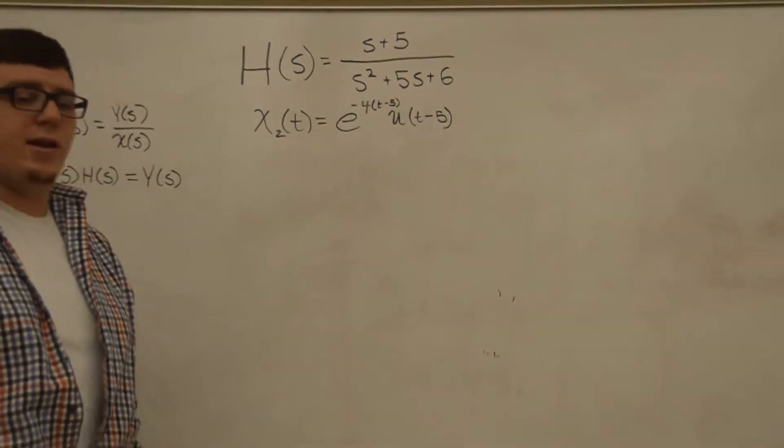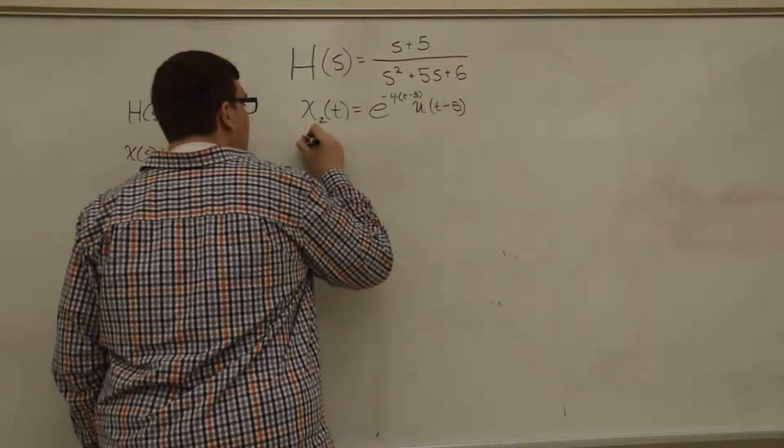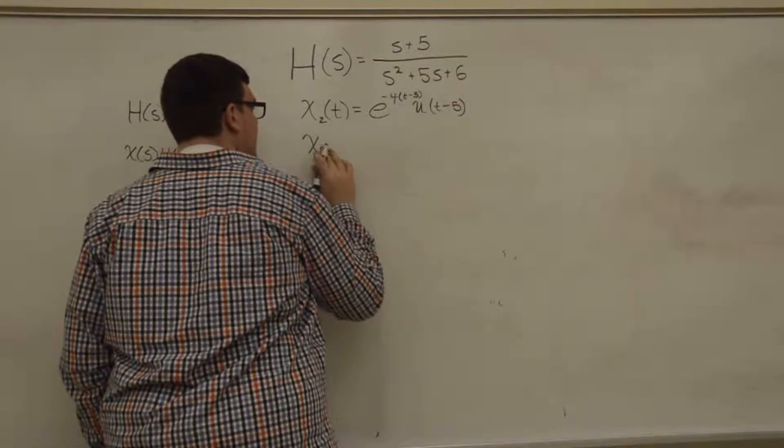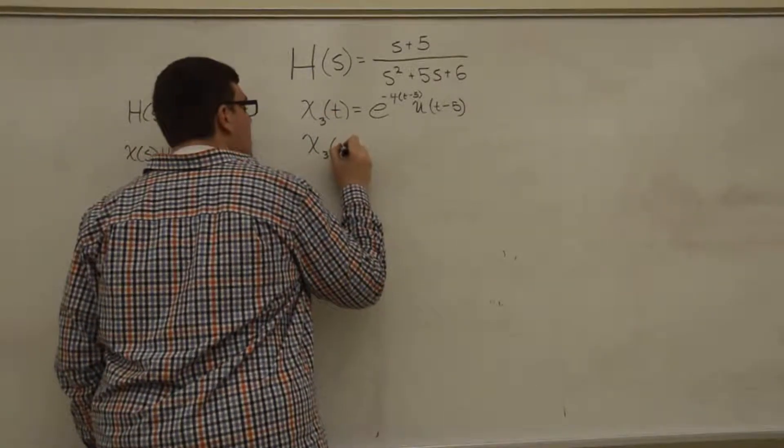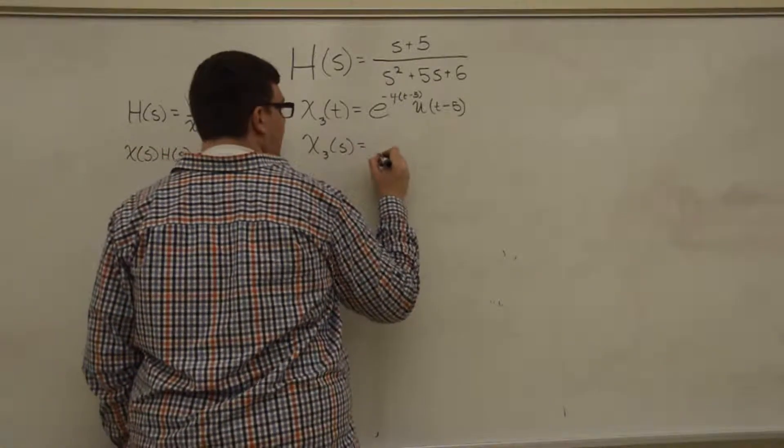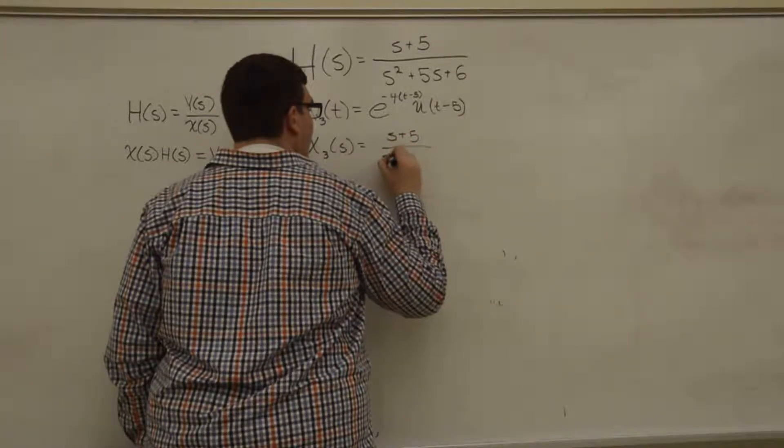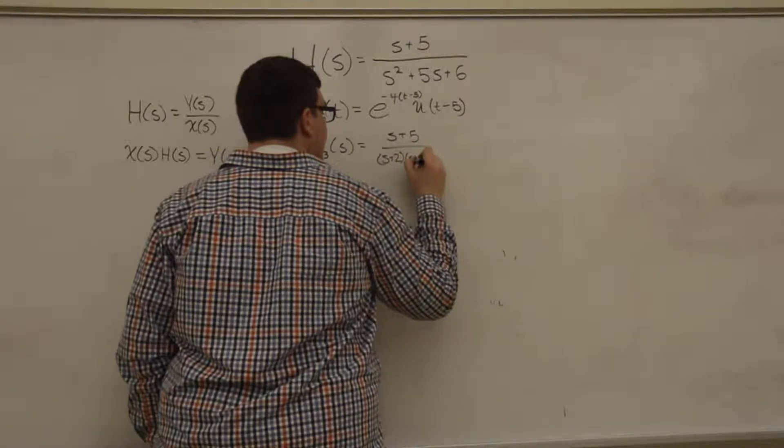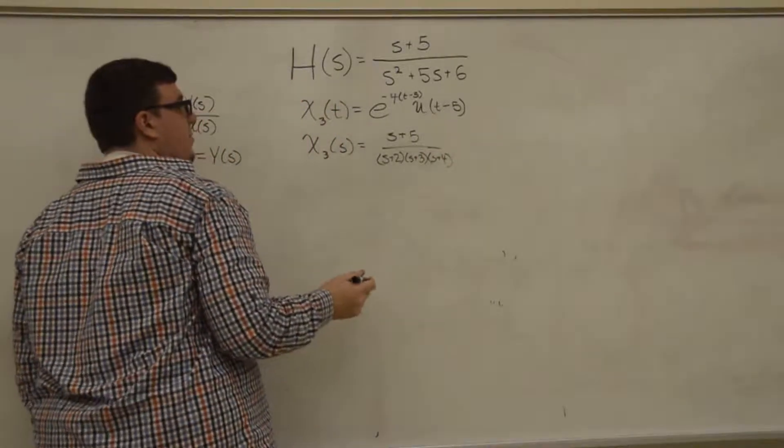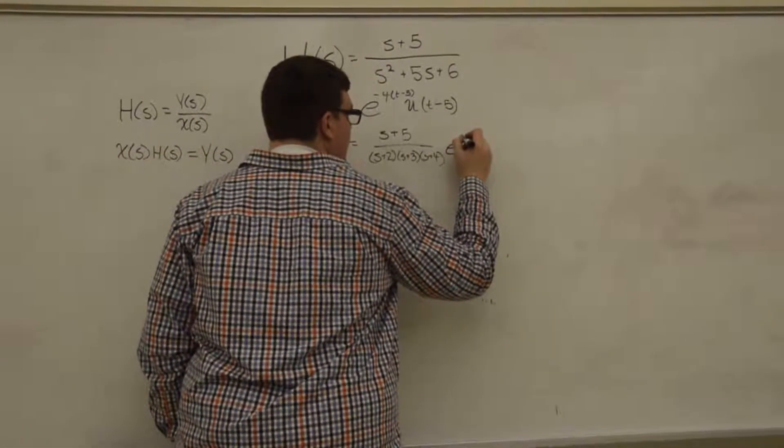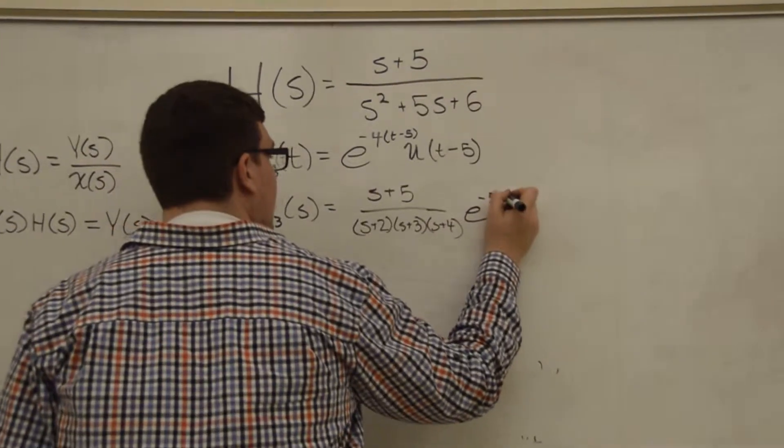And so we have a rule when we're dealing with Laplace transforms that a time shift, or a shift in the time domain, results in the exact same, so I guess this is x₃(t). A time shift results in the exact same Laplace transform, so we get (s+5)/((s+2)(s+3)(s+4)). But in the Laplace domain, we multiply by e to the time shift, so here it's -5, it's a time shift of -5 because it's t-5, times s.